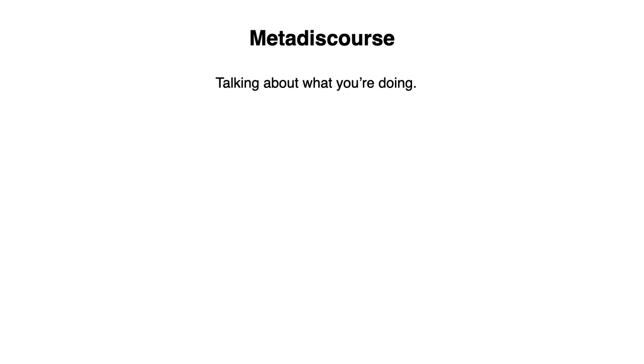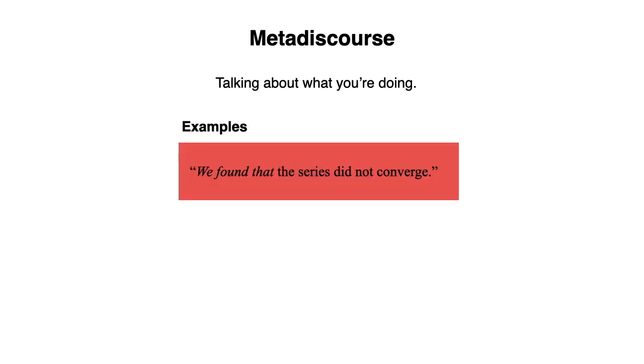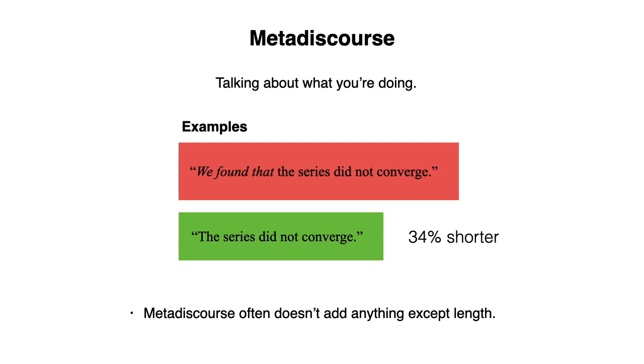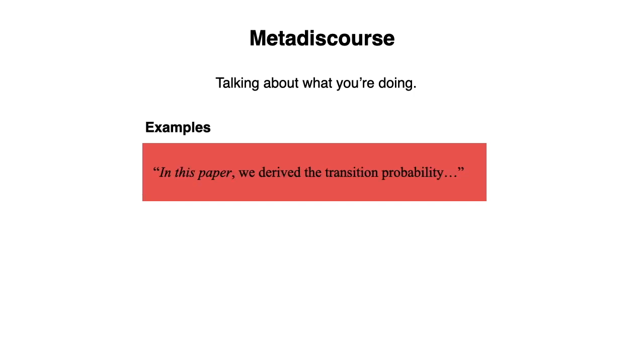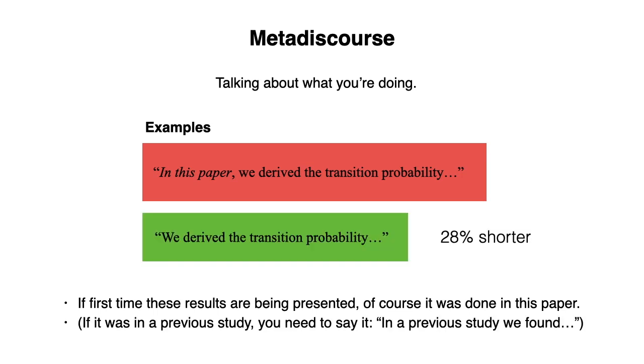Another thing you can avoid is talking about what you're doing. For example, we found that the series did not converge. Meta discourse often doesn't add anything except length. It would be shorter to just say, the series did not converge. What about this example? In this paper, we derived the transition probability. If this is the first time these results are being presented, of course it was done in this paper. It would be shorter to say, we derived the transition probability.